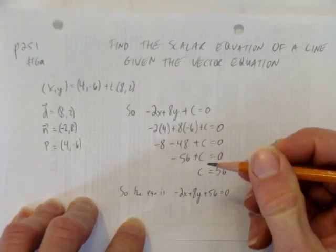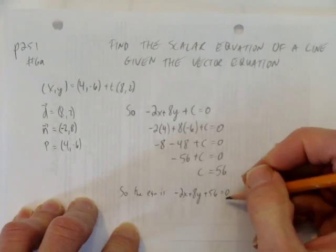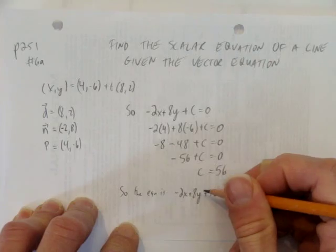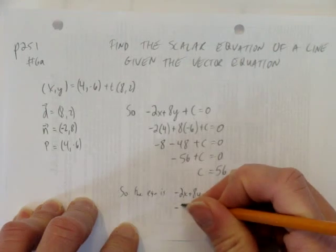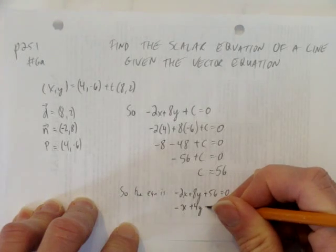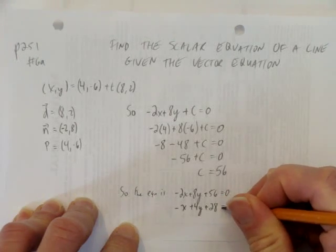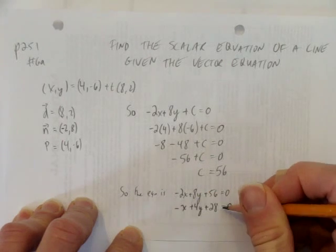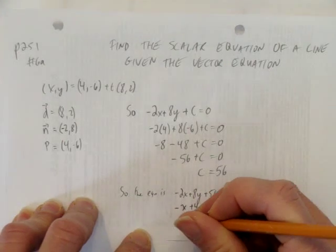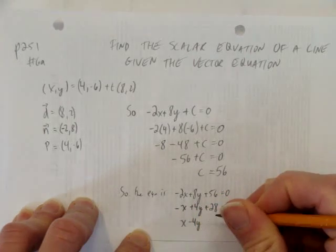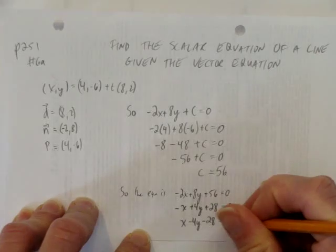Now, we could have noticed this earlier. This equation can and should be reduced. First of all, we should divide it all by 2. And we get negative x plus 4y plus 28 equals 0. And we also don't like to lead with a negative, so let's divide everything by negative 1, or flip all their signs.